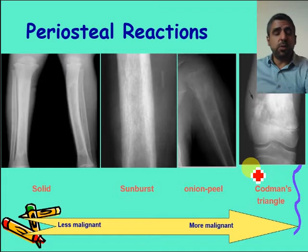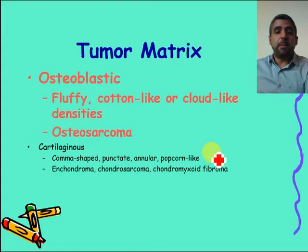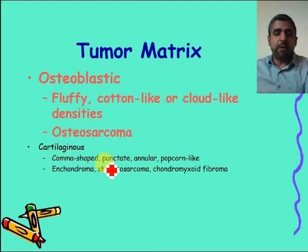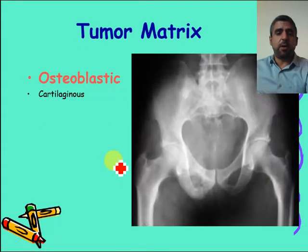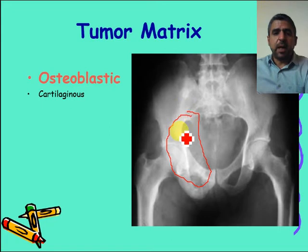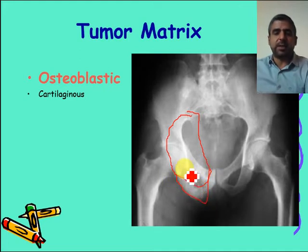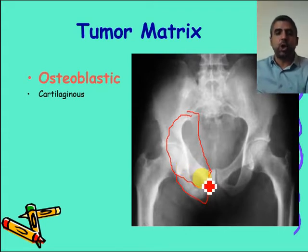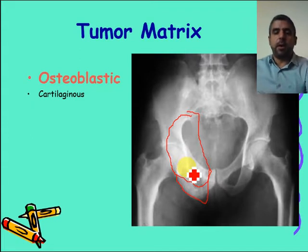The next clue is the tumor matrix. Tumor matrix can be osteoblastic — described as fluffy, cotton-like, or cloud-like densities as seen in osteosarcoma — or cartilaginous, which has different kinds of calcifications. Regarding osteoblastic tumor matrix, this osteosarcoma case shows dense, ill-defined lesions involving the bony pelvis and ischium. It is dense, sclerotic, and osteoplastic, meaning bone-forming tumor — heavily calcified.